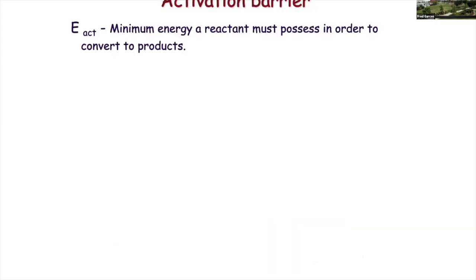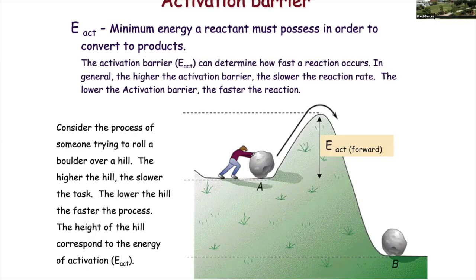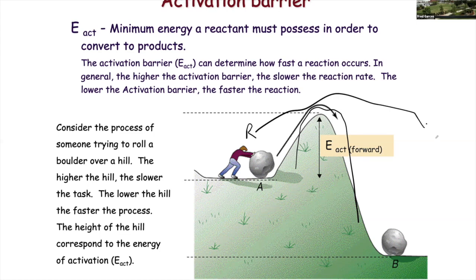Let's take a look at something called the activation barrier. Whenever a reaction takes place, a reactant does not readily convert over to product because there's a big wall that prohibits the reactant from spontaneously converting to product. If there was no wall, the reactant would just convert over to products. The height of that wall is called the activation energy, and it determines the speed of the reaction. If you're going from point A to point B and there's a huge wall, it's going to be a slow process.